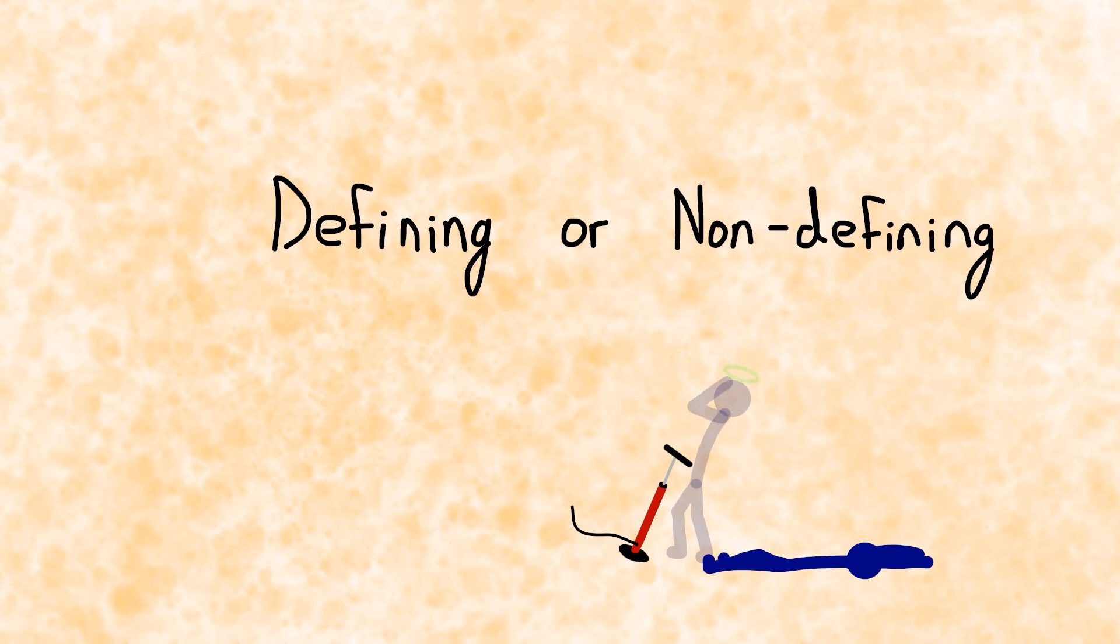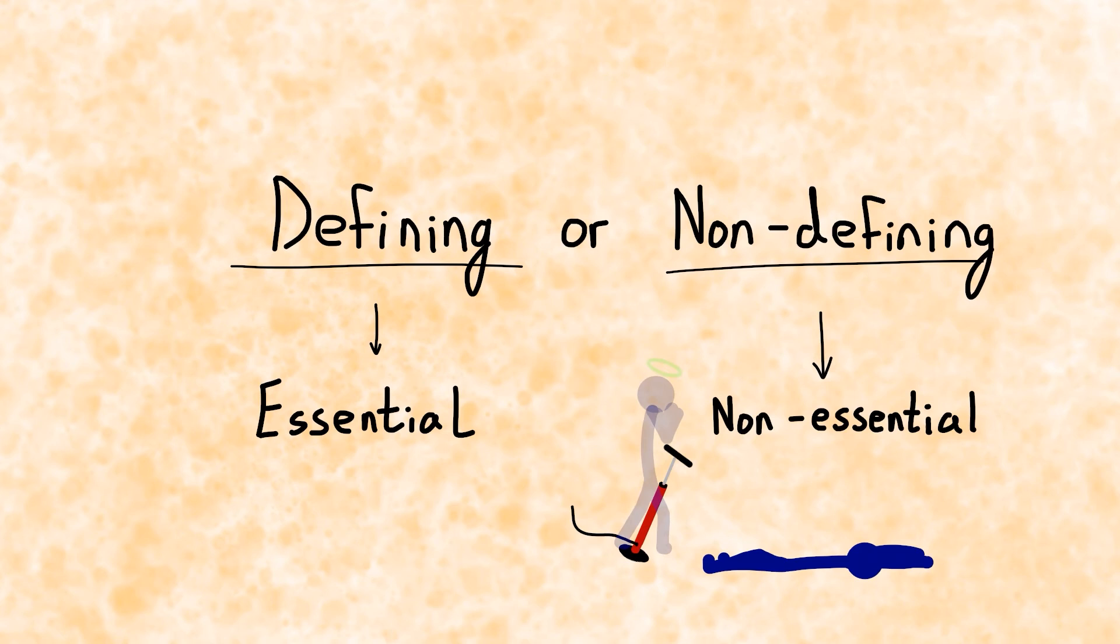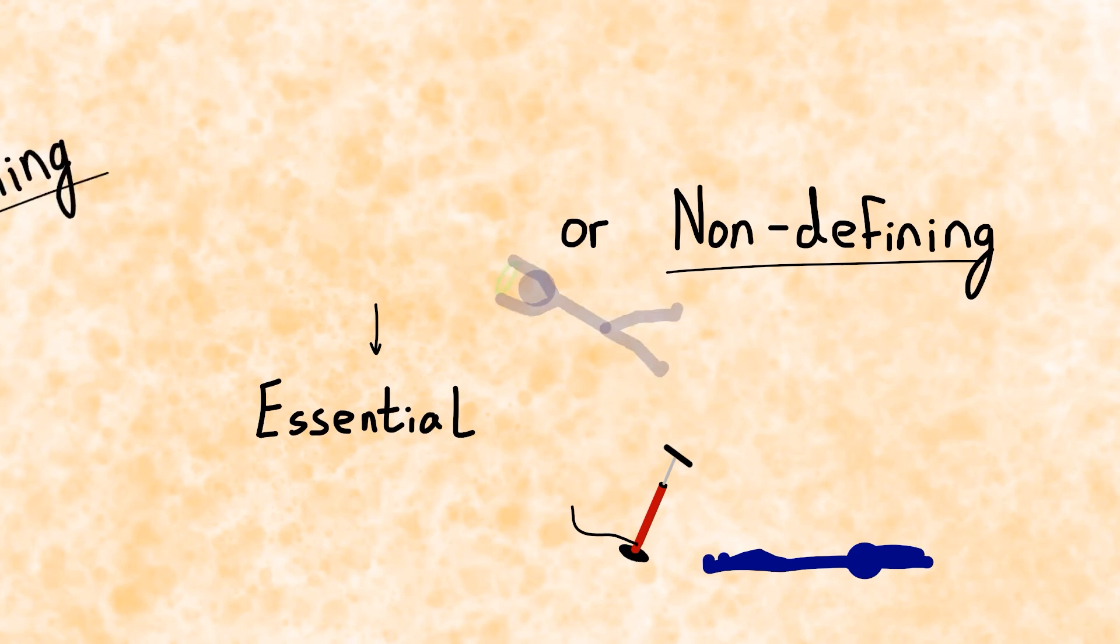When relative pronouns are used to add descriptive information to a sentence, that information can be considered defining or non-defining. Defining or non-defining basically means essential or non-essential. But how do we know if the information is essential or non-essential? Well, let's see.